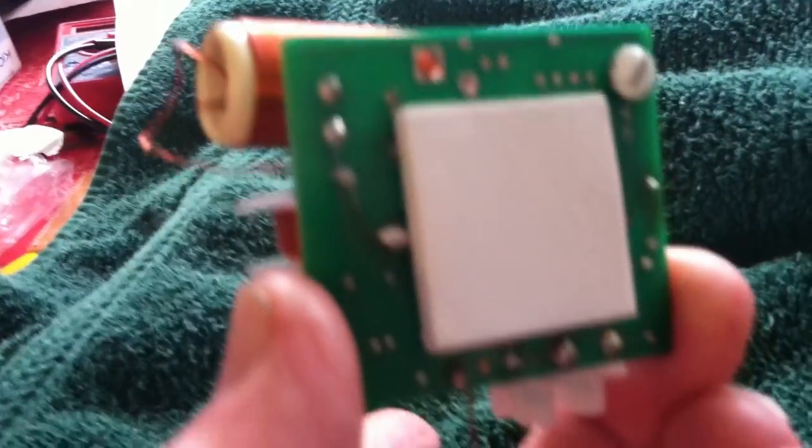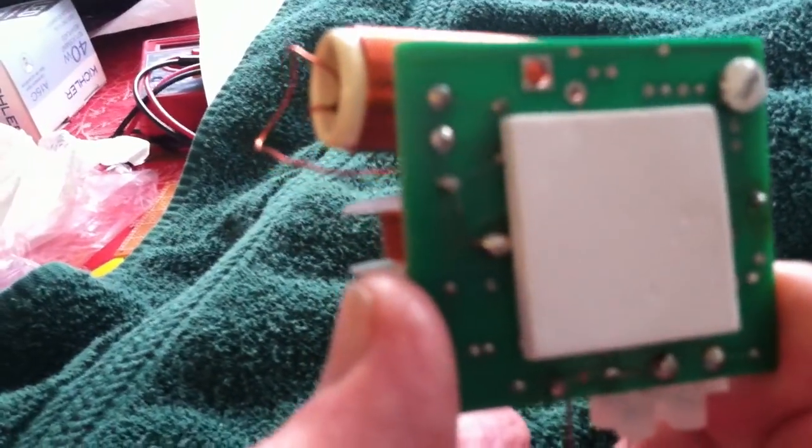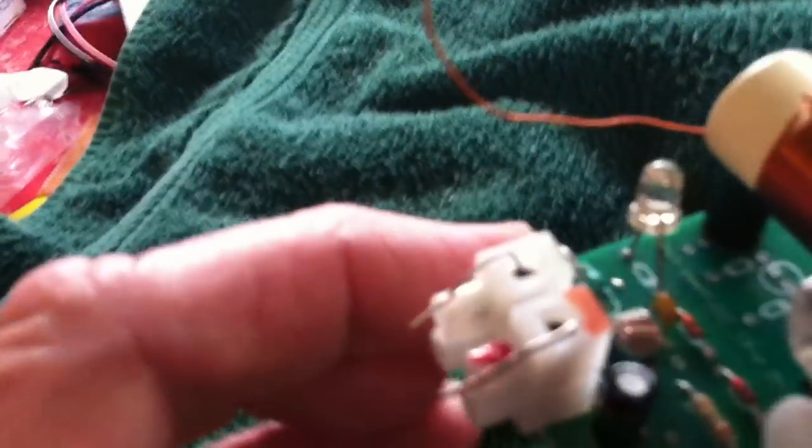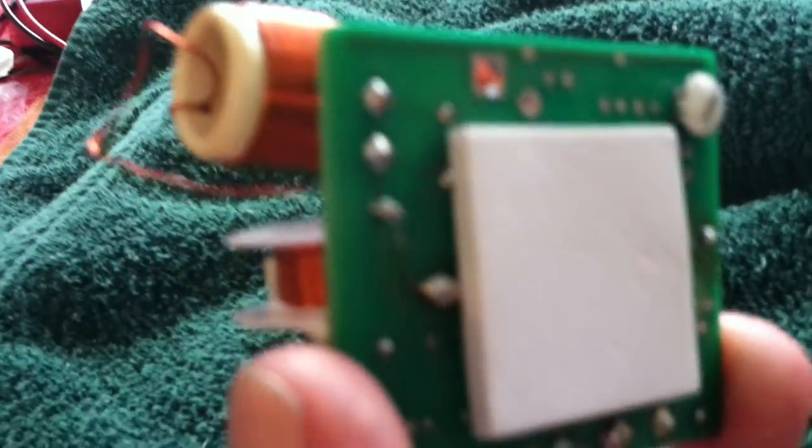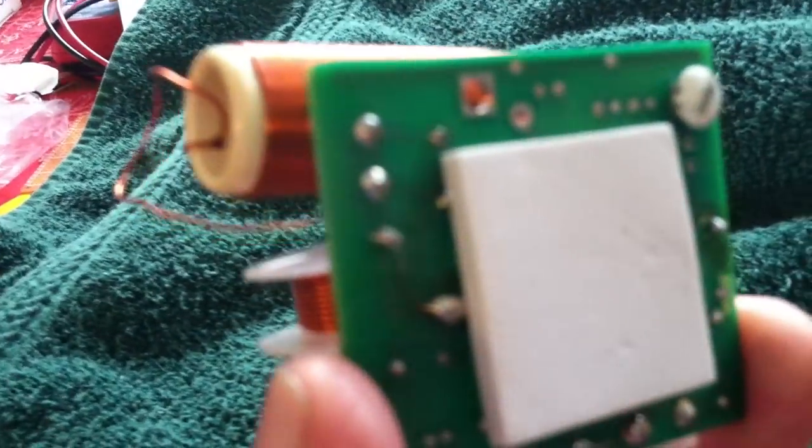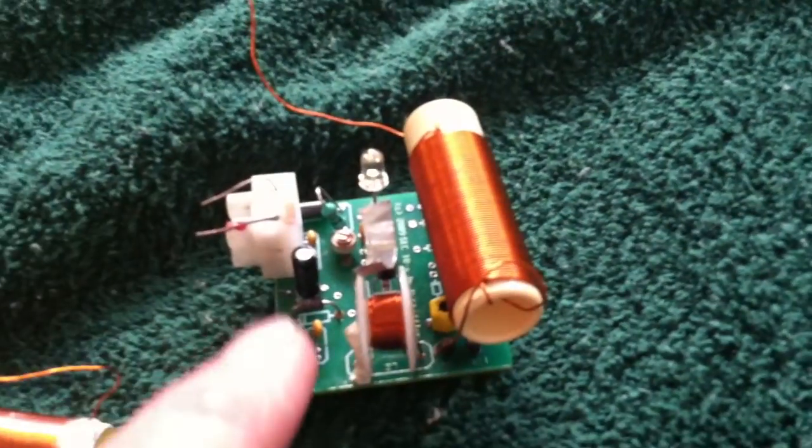I screwed up the traces on the back of this and had to repair it, so just be careful with it. The transistor is removable, so you don't have to worry about that. But the bottom traces are really delicate, and you can short it out pretty easily if you're not careful. That's a SEC-18-8.